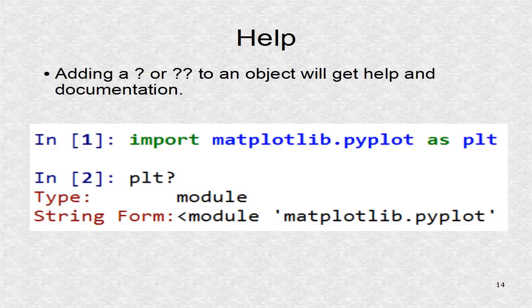Adding a question mark or two question marks to an object will give help, documentation, or even source code, depending on how much IPython can find by searching the files.